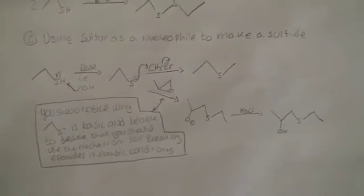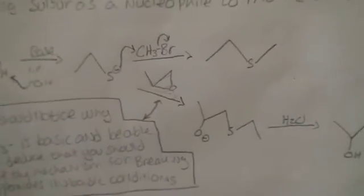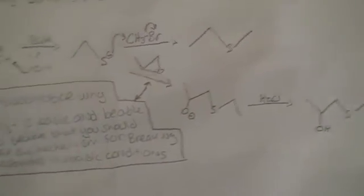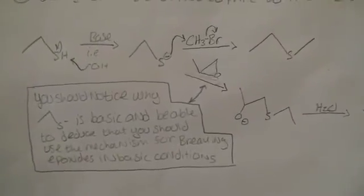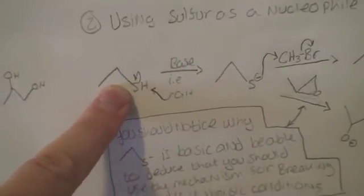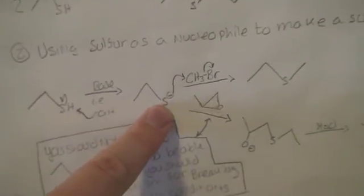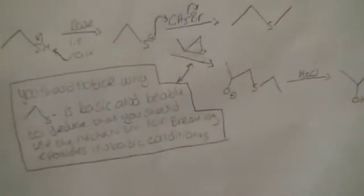And then the S- can attack something that has a bromine on it, or it can attack an epoxide. One thing to notice is that you have an SH. You add base to it. You pull off a hydrogen. So this is acting as an acid, and this is acting as a base. So you make the conjugate base. So you're in basic solution here.